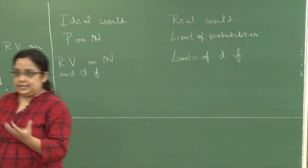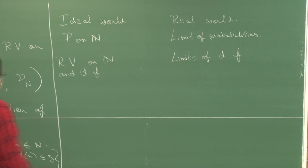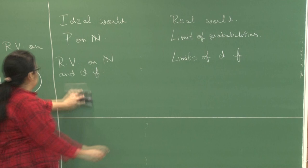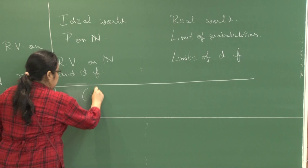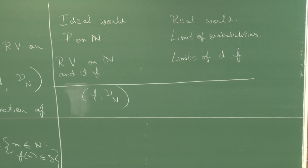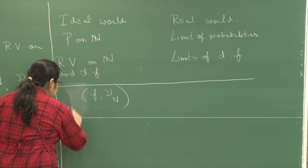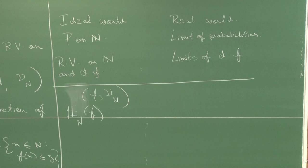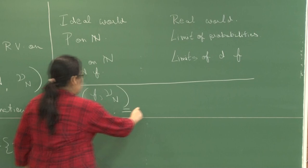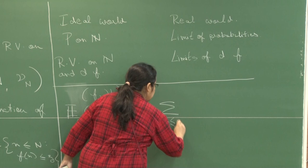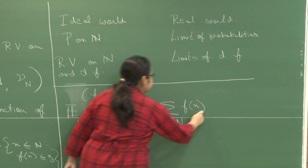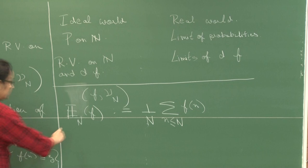The other notion we studied, which is extremely important for us: let us talk about f with respect to the probability ν_N. What is the expectation E_N of f? We saw that this is what, in the language of number theory, is called the average order of a function — that is, (1/N) times the summation of f(n) for n ≤ N.